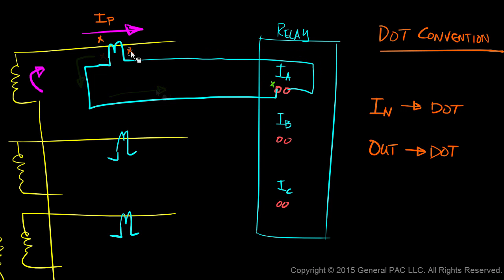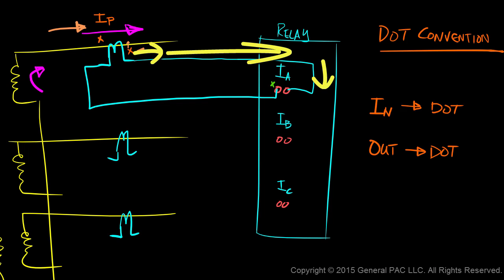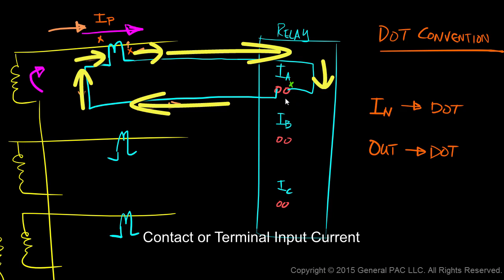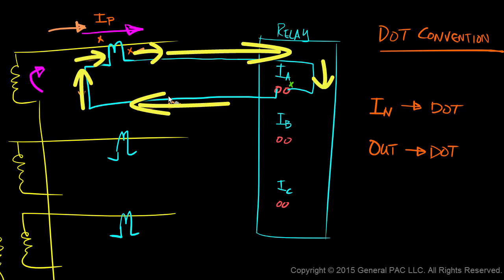Suppose now we have the dot on this side of the transformer — how would we interpret that? Current that flows into the dot on the primary side must flow out of the dot on the secondary side. The dot comes out like that, so current flows out of the dot on the secondary side and makes that loop in this direction. Because we have the dot on this side now, we should expect the polarity side to be like this — this is the polarity contact of our relay.